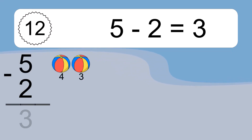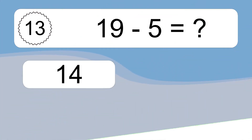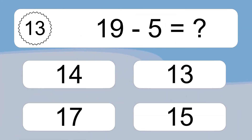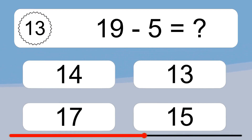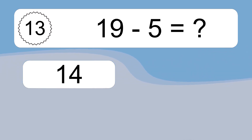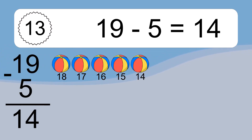5 minus 2 equals what? 5 minus 2 equals 3. Let's count it. 4, 3. 19 minus 5 equals what? 19 minus 5 equals 14. Let's count it. 18, 17, 16, 15, 14.